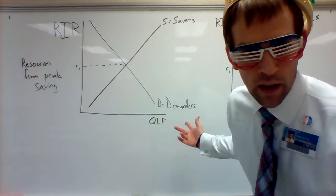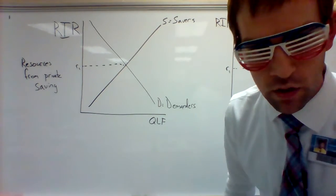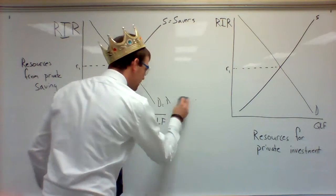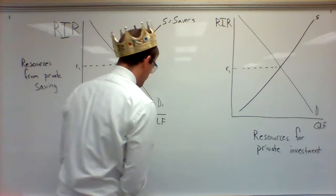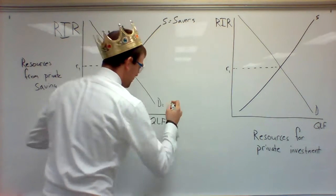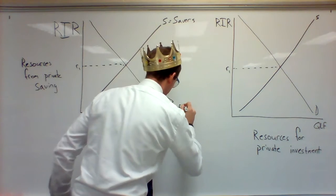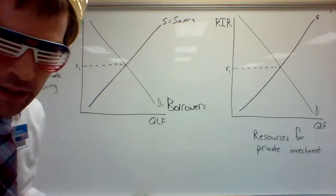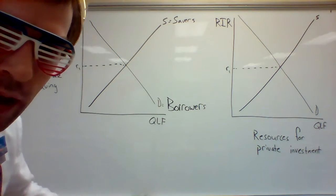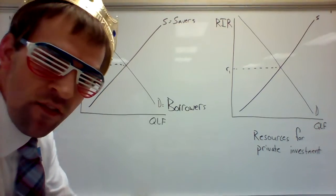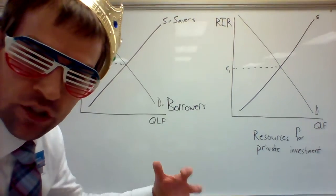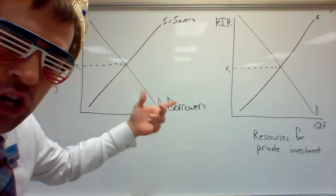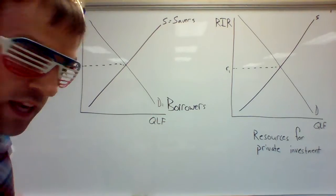I wrote 'demanders' for D — this should actually be 'borrowers' here. So we've got savers and borrowers. And if these guys change their behaviors, if these curves shift, we change the interest rate.